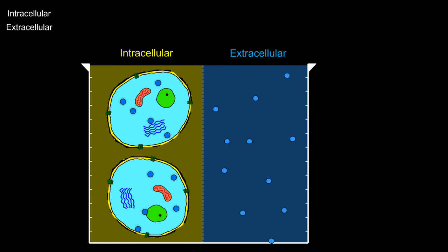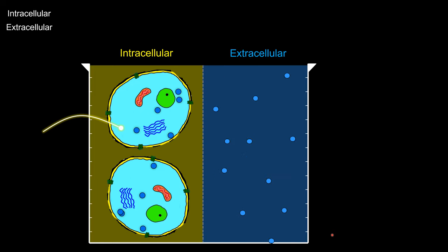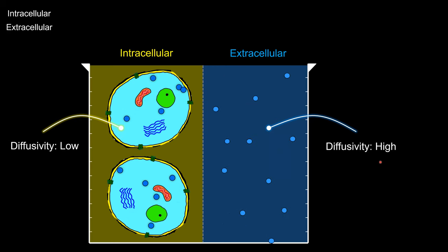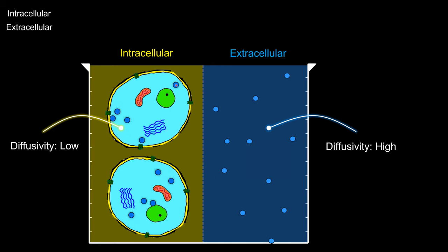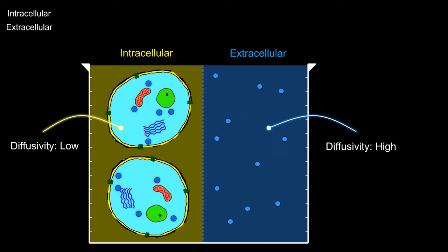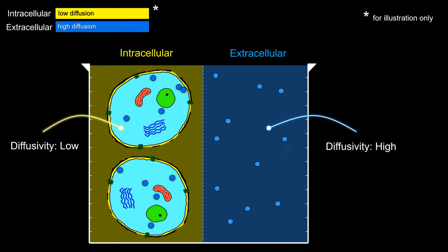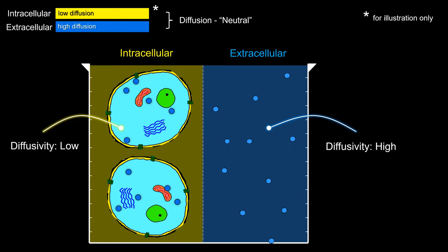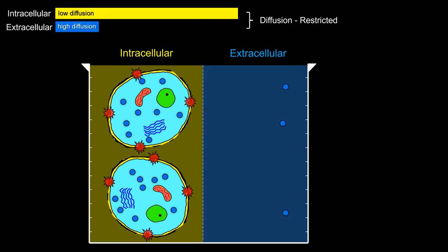In this simplified diagram, there's a sample comprising an intracellular compartment and an extracellular compartment. Water in the extracellular compartment has relatively high diffusivity, compared to intracellular water where diffusion is more restricted by the cell membrane, cytoskeletons, etc. If we say there are equal numbers of intracellular and extracellular water molecules, the sample is diffusion neutral. Then acute infarction occurs: water flows from the extracellular into the intracellular compartment, so on average the entire sample has more restricted diffusion compared to adjacent normal tissue.